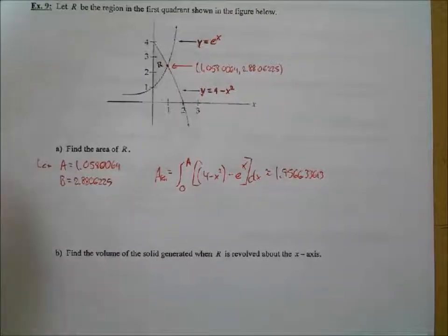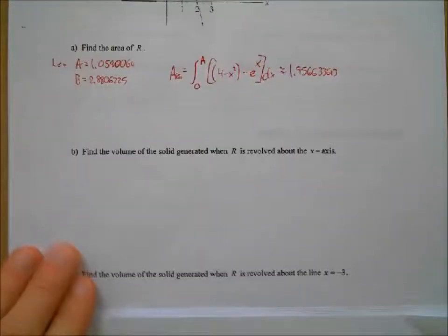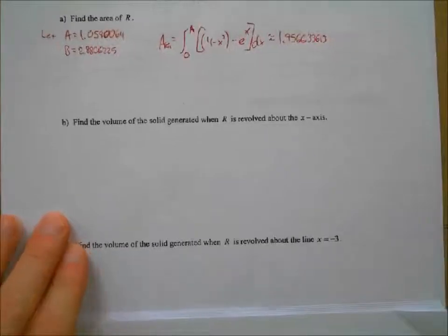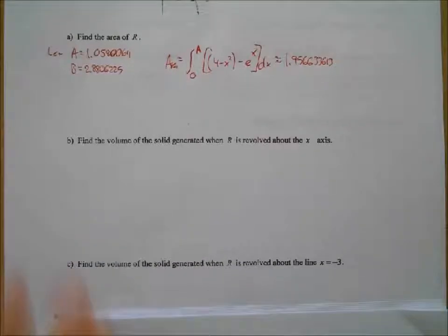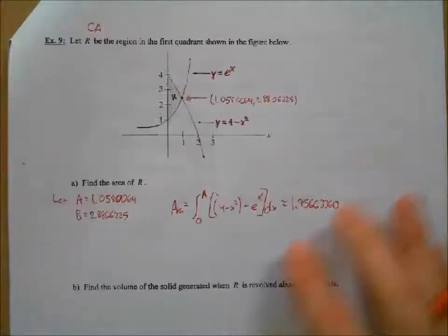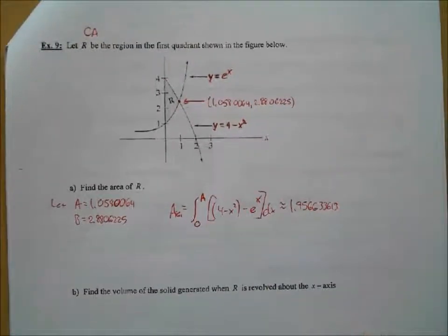All right. Then letter B, then. Find the volume of the solid generated when R is revolved about the x-axis. So now we're going to take that region, revolve it about the x-axis. Since we're revolving about the x-axis here, we're going to be integrating with respect to what variable? So horizontal line, axis of rotation. So it's respect to x, right? Everything should be in terms of x.